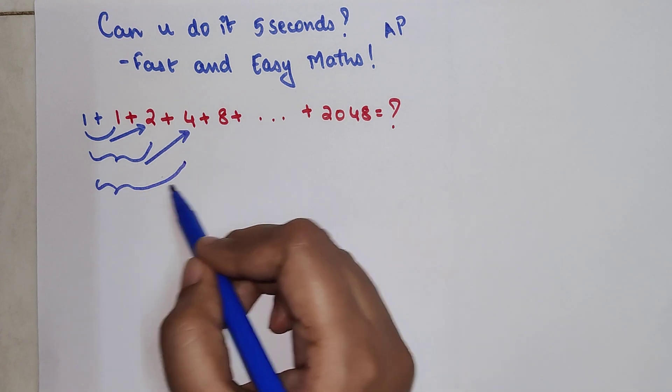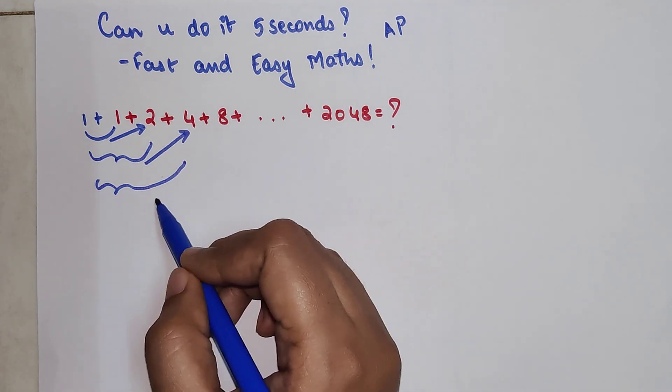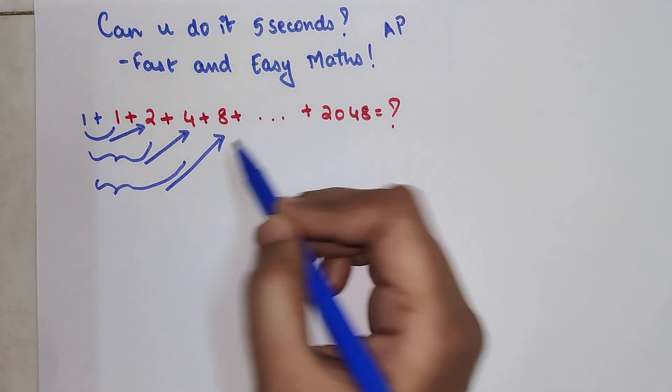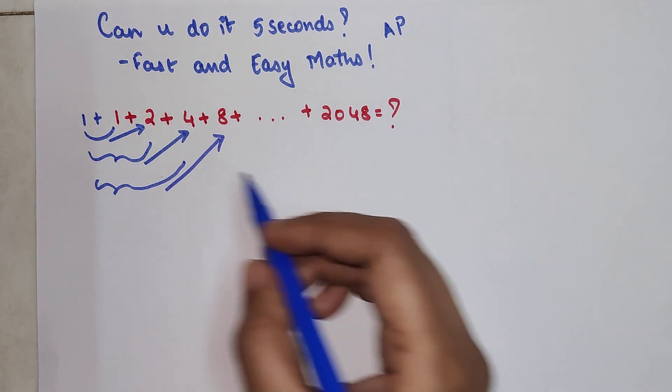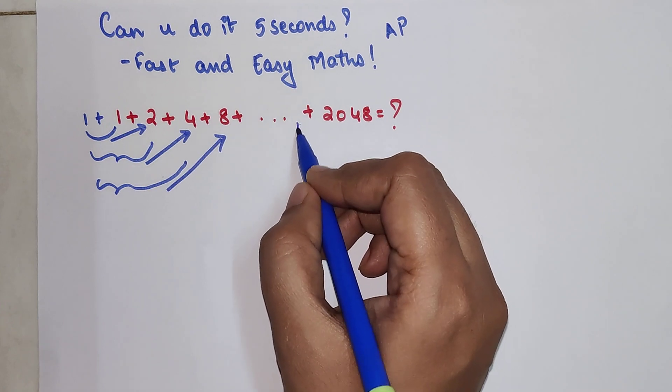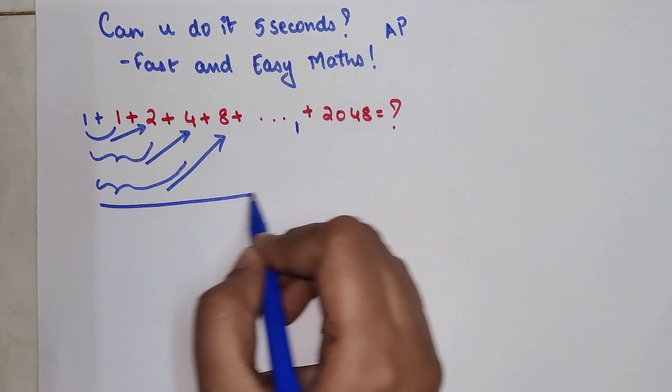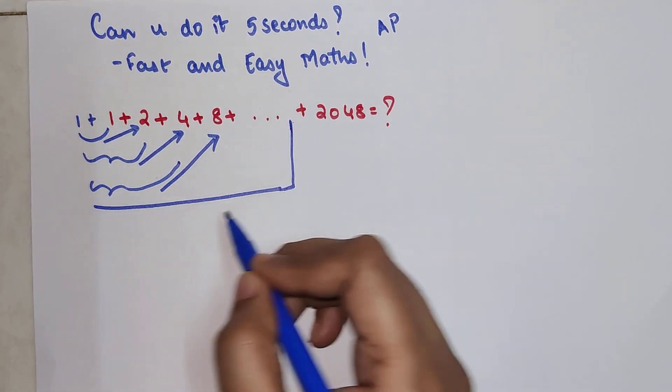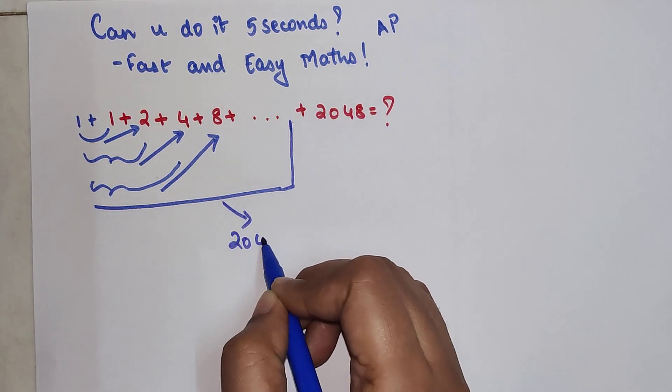Addition of all these terms till 4, I am getting the value of 8. So I can say that addition till this particular point will get me the value of 2048.